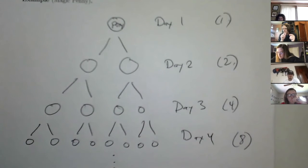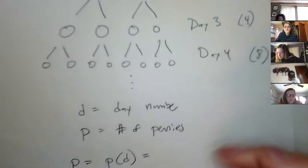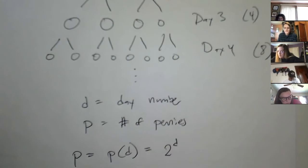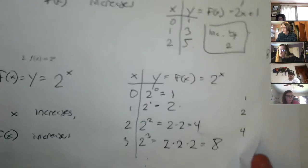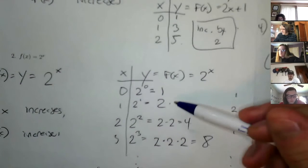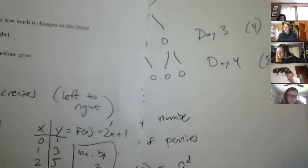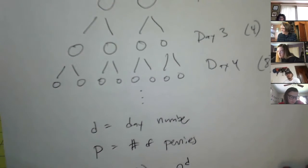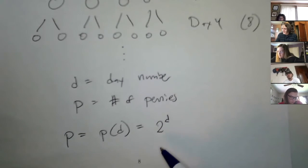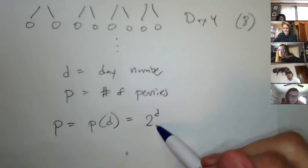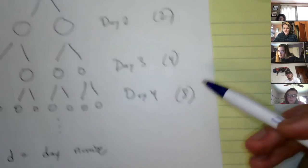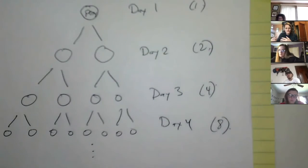This is just like that example we did earlier — we played around with the function 2 to the x and saw this doubling behavior: 1, 2, 4, 8. Let's check: if I plug in d equals 1, I get 2. Plug in 2, I get 4. Plug in 3, I get 8. So it's the right pattern — the right number of pennies. The only problem is our indexes are wrong — it's just kind of shifted. So what I need to do is put a minus 1 there: 2 to the (d minus 1).